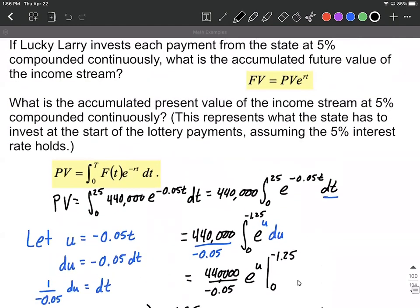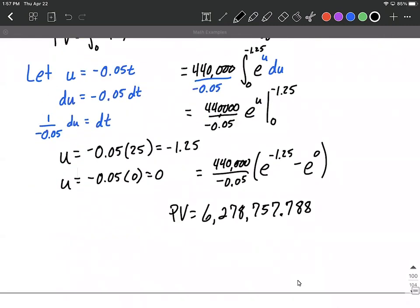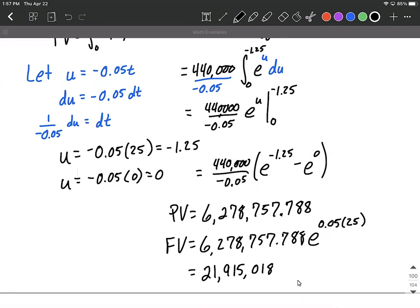We're going to take that value and plug into our future value formula. So remember, it's present value multiplied by e raised to the r times t. So our future value is going to be this number multiplied by e raised to the rate. Remember, our rate was 5%. And then our time frame, we're looking at 25 years into the future. What is Lucky Larry's investment actually going to be worth over that time? $21,915,018 to the nearest dollar. So even though initially it said he won $11 million, if he invests all of that, he has over $10 million extra dollars after 25 years.